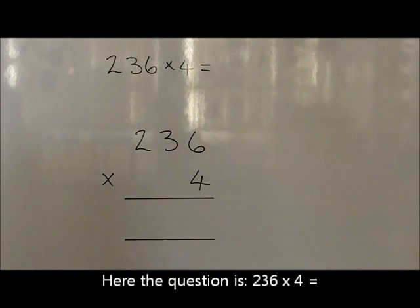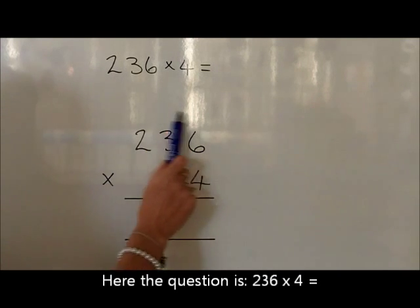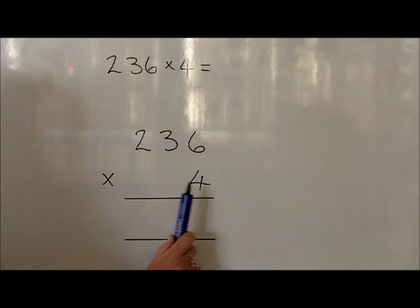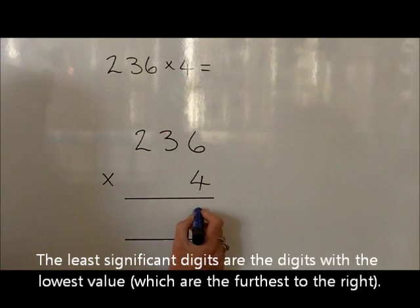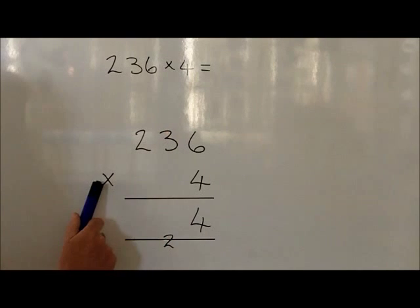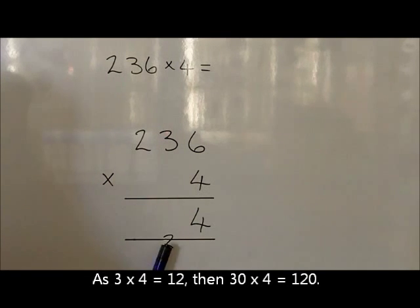With short multiplication for the question 236 times by 4, we write out the 236 on the top row, which we then multiply by 4. We start in the least significant digit column and start with 6 times 4, which is 24. We write that as a 4 in the units and carry 2 tens to the tens column. We now look at 30 times by 4; because we know 3 4s are 12, 30 times 4 is 120, plus the 20 carried is 140.